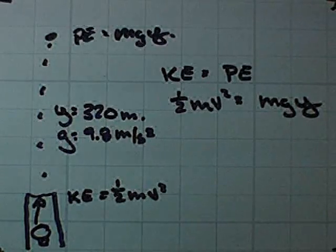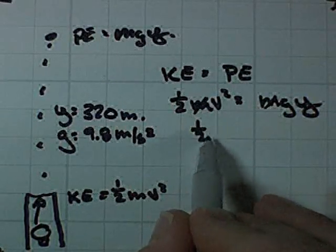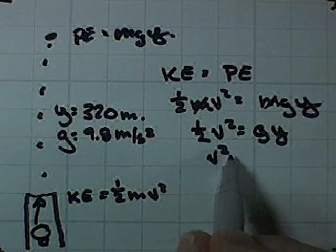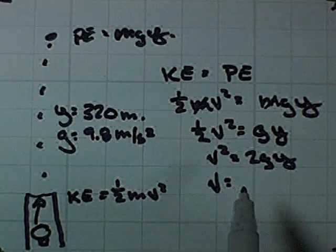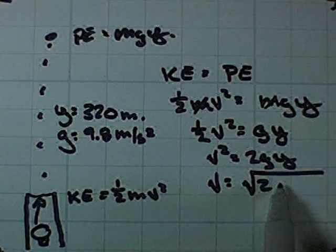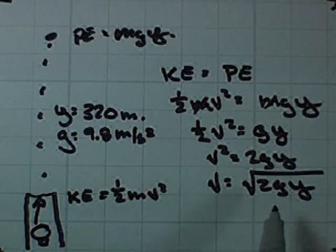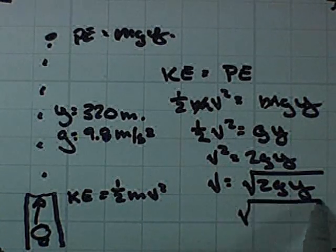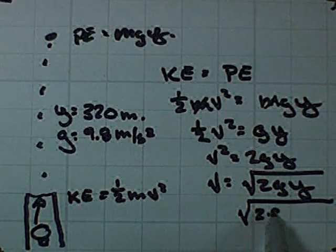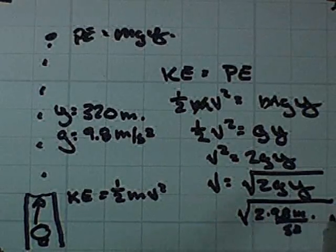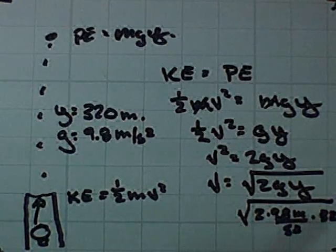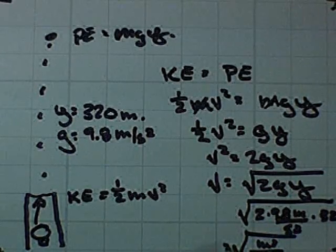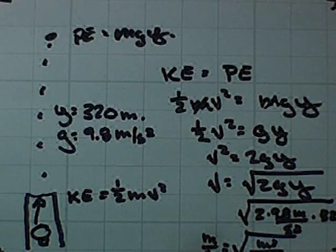The first thing you notice is there's m on both sides of the equation, so we can divide it out and cancel it. So one half v squared is going to turn into gy. So v squared equals 2gy. My launch velocity has got to equal the square root of 2gy. I plug in my numbers, y I'm using 320 meters, g I'm using 9.8 meters per second squared. Let's do dimensional analysis. 2 times 9.8 meters per second squared times 320 meters. I'll have meters times meters, so my dimensions will be the square root of meters squared over seconds squared. I'll end up with units of meters per second, which is exactly what I'm looking for.